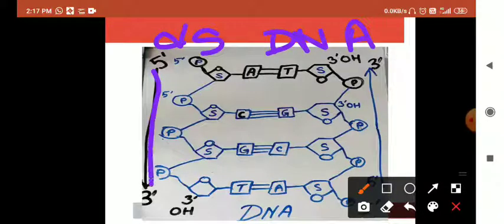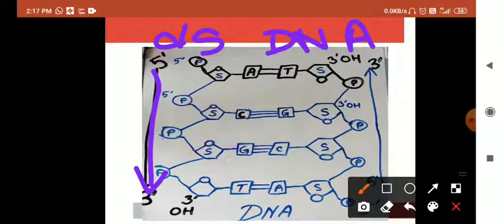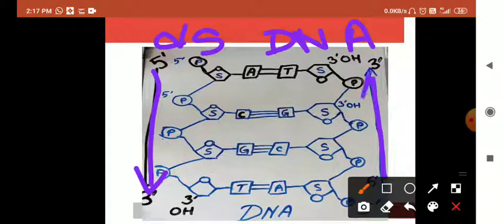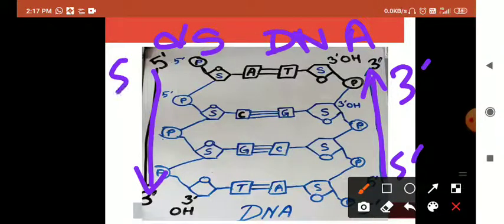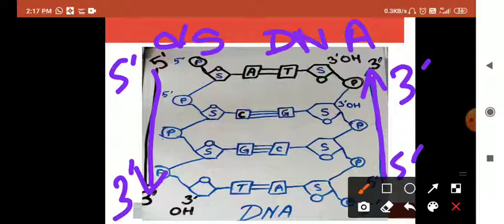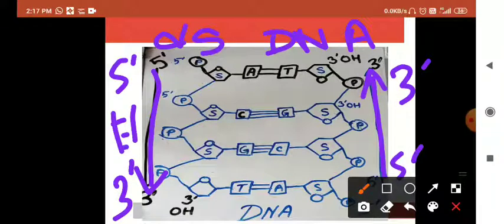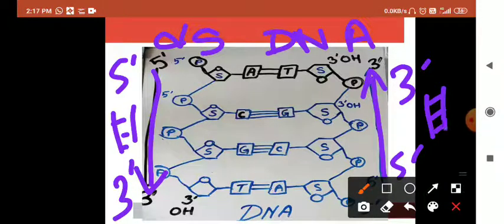This strand is running from 5' to 3'. This is 5' to 3'. So they are parallel. It means that one will not cross one another. The distance will always remain the same. That is called as parallel. And the other is anti-parallel.